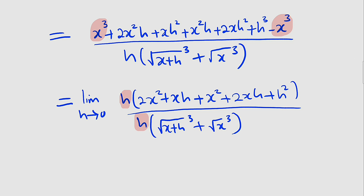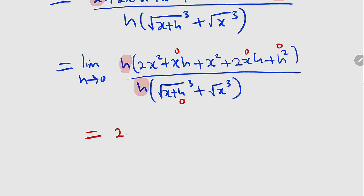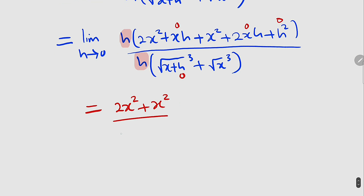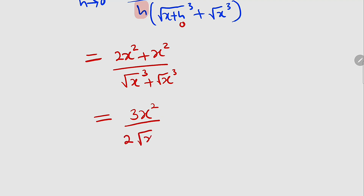Wherever we have h, we replace it with 0. This will become 0, this will be 0, this will be 0, this will be 0 as well. So this is equal to 2x squared plus x squared on the top — all other terms become 0. And on the bottom, we have square root of x to the power of 3, because h becomes 0, plus another square root of x to the power of 3. To the top we have 2x squared plus x squared, which gives us 3x squared. To the bottom, these two terms are exactly the same, so we have 2 square root of x to the power of 3. This is the same thing as 3 over 2 multiplied by x squared divided by x to the power of 3 over 2.